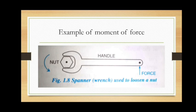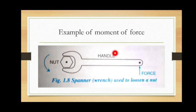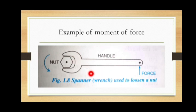The next example is a spanner, which is used to loosen a nut. Here we apply the force on the handle, and here is the fixed point about which the handle can move. This spanner can rotate about the fixed point. We fix the spanner on the nut, and then it can rotate in either direction.